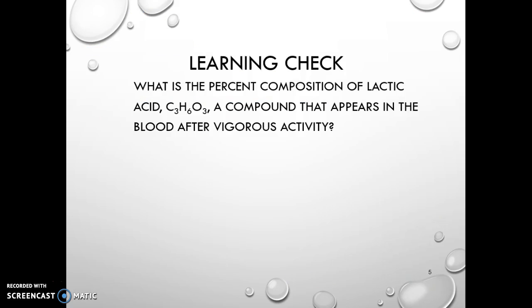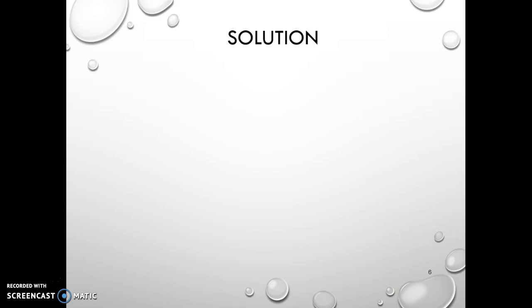So here we go. Learning check. What is the percent composition of lactic acid, C3H6O3, a compound that appears in the blood after a vigorous activity? So after you exercise, you actually get lactic acid that builds up in your bloodstream. So what are we going to do? First, step one, we have to find the mass of everything. So we have three carbons, 12.01, six hydrogens at 1.01, three oxygens at 16. And if we add all that up and multiply all that together, that gives us 90.08.